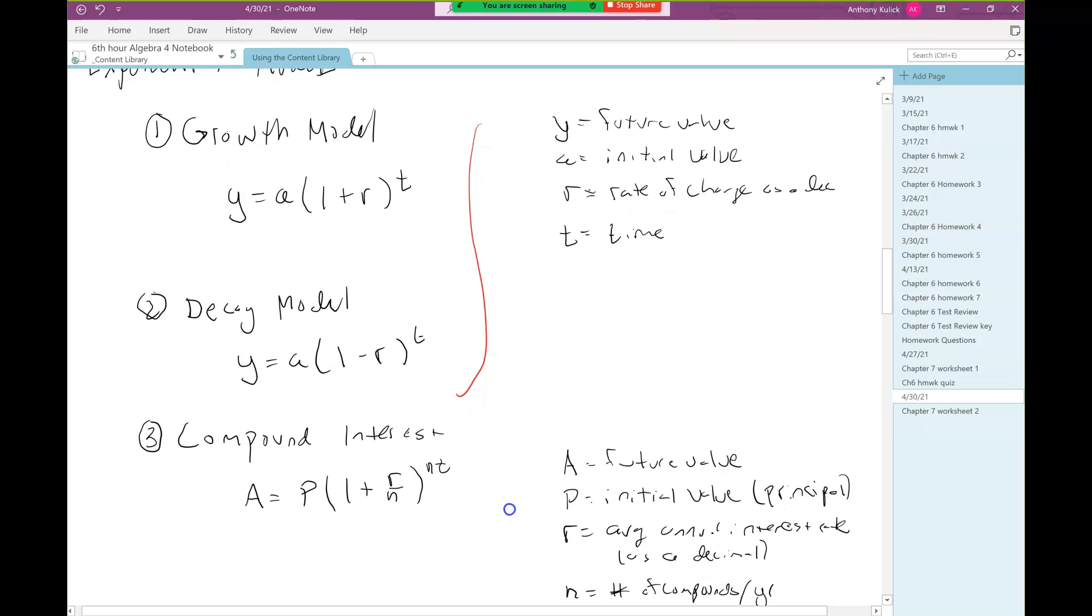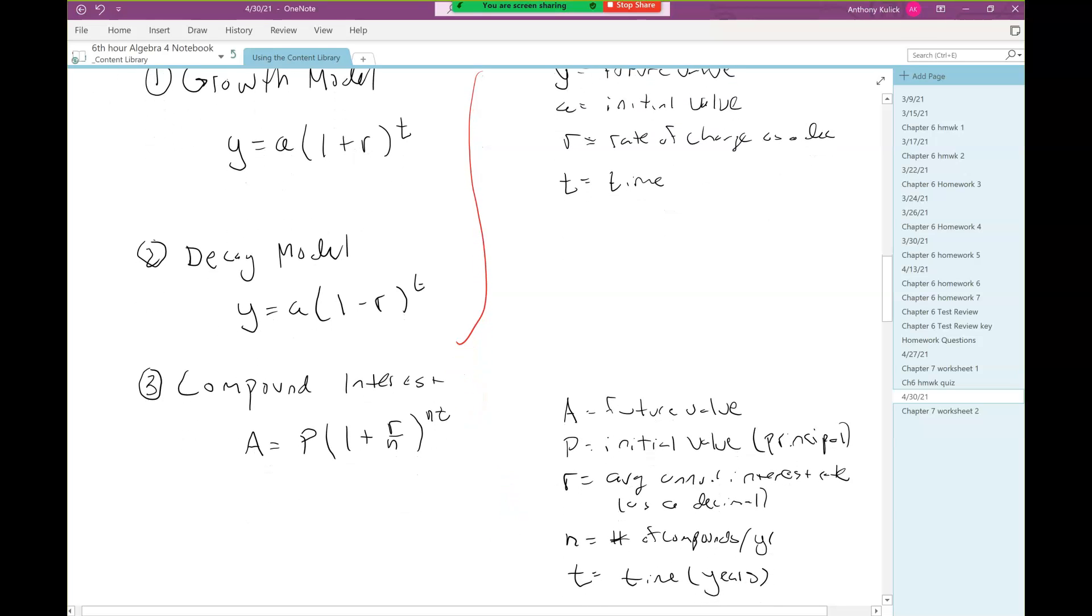The third type of model is compound interest: a equals p times 1 plus r over n to the nt, where a is some future value, p is some initial value, r is the average annual interest rate written as a decimal, n is the number of compounds per year, and t is time in years.